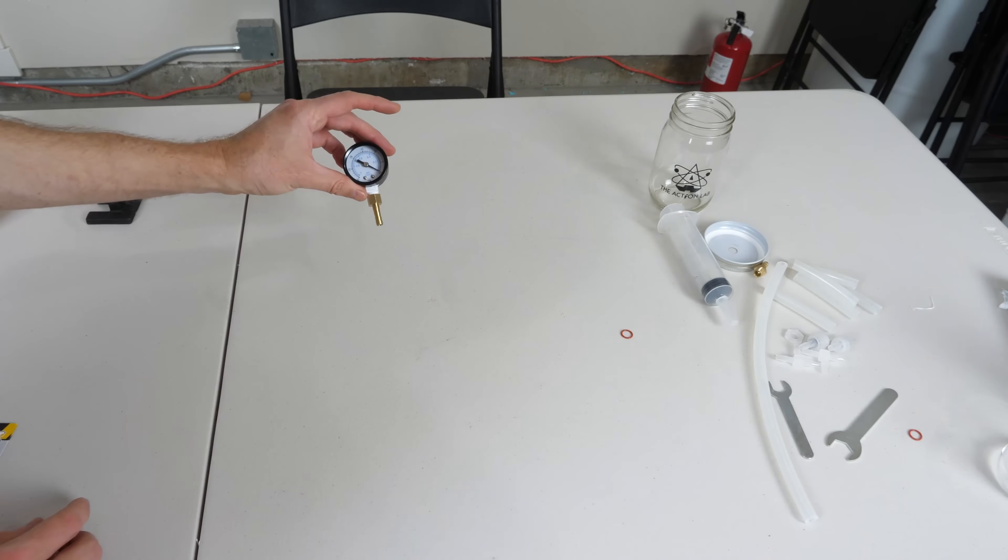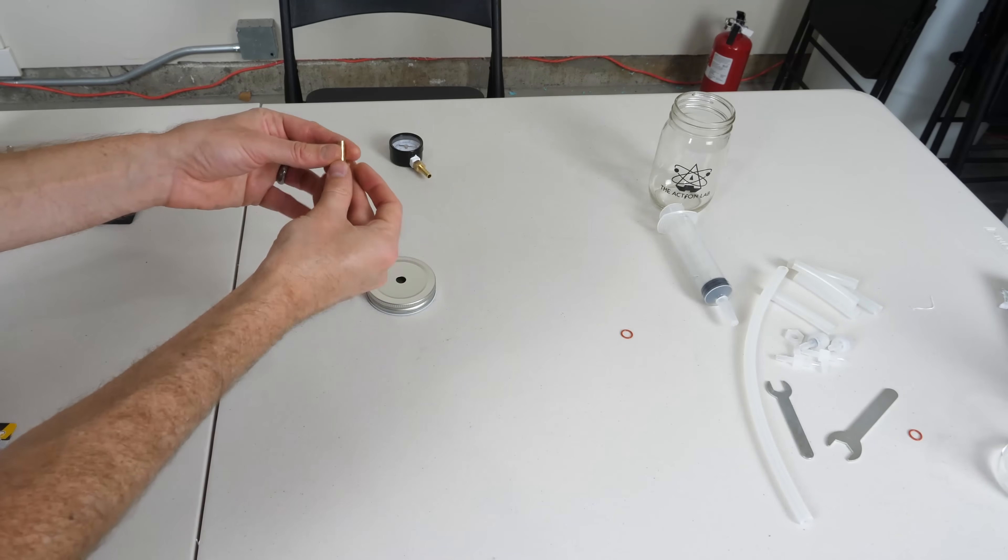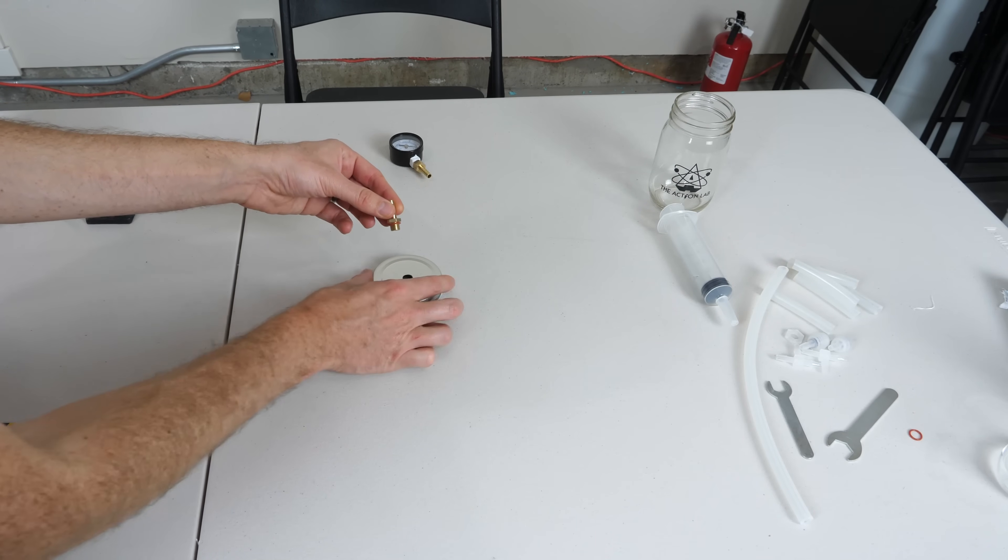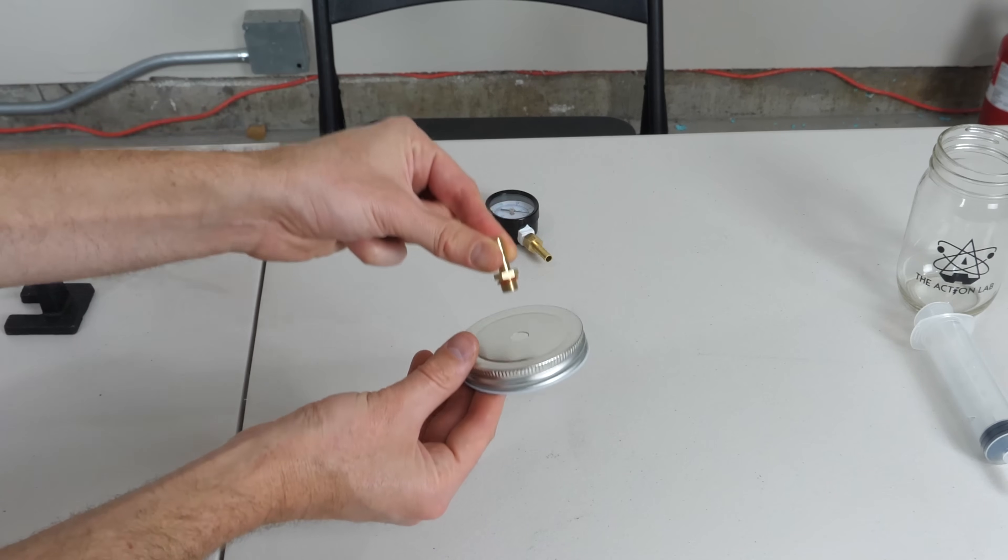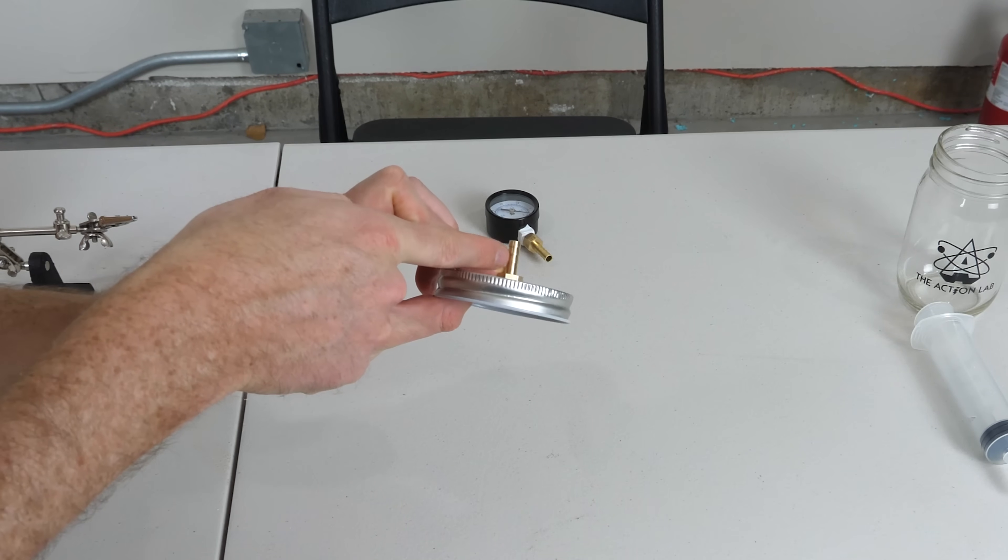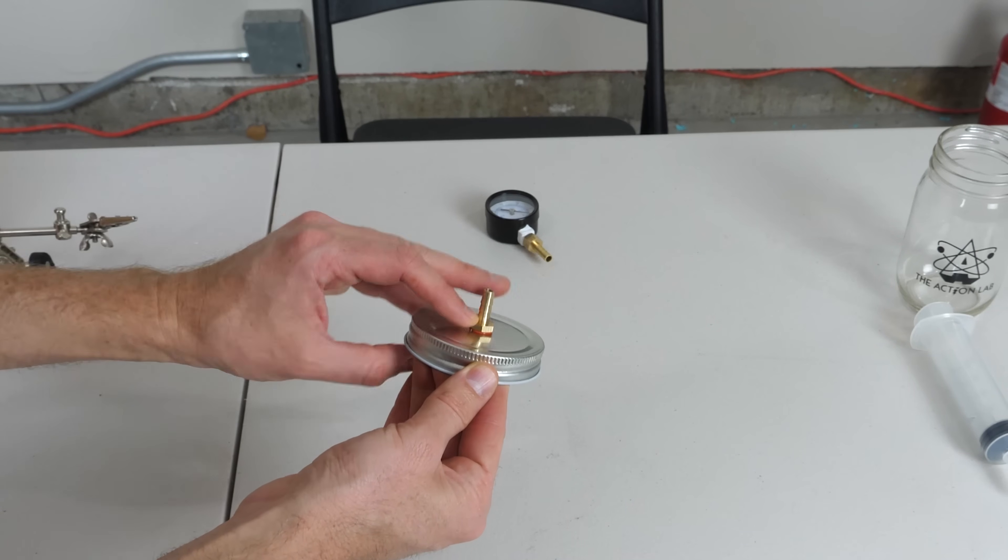Then once you have your vacuum gauge assembled, you can assemble your tube line. The first step is to take your hose adapter and put an O-ring on it. Put the O-ring on the threaded end here, and then put it through the hole. Now the O-ring should be between the hose adapter and the lid. The O-ring is what actually creates the vacuum seal.